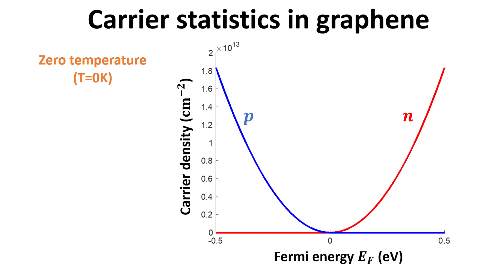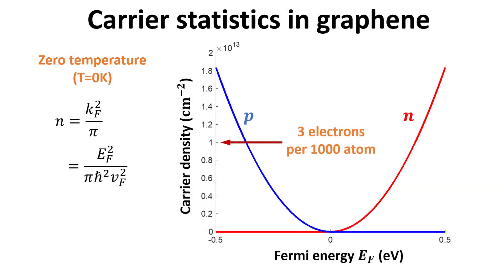Here, we show the calculated n and p over the typical experimental range of the Fermi energy EF, assuming zero temperature. We note that the carrier density of 1 times 10 to the power of 13 per centimeter squared corresponds to only 3 electrons for every 1000 carbon atoms. This level of carrier densities is substantially lower than the 1 electron per atom in normal metals like gold.